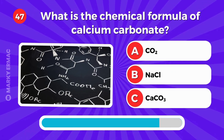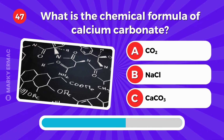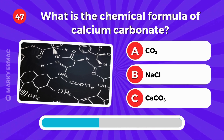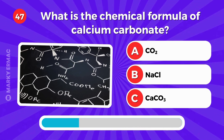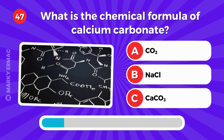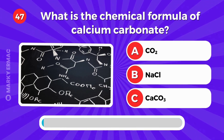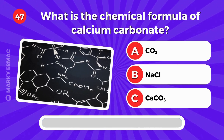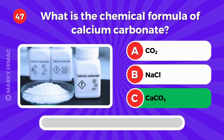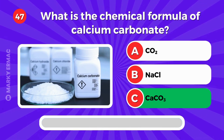What is the chemical formula of calcium carbonate? It's letter C — CaCO3.